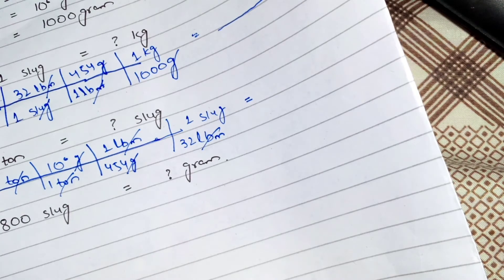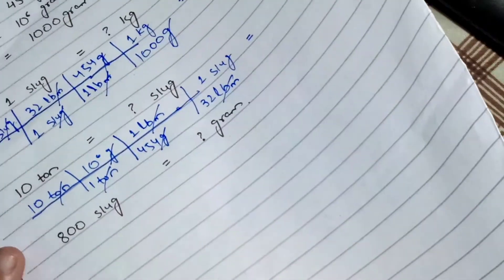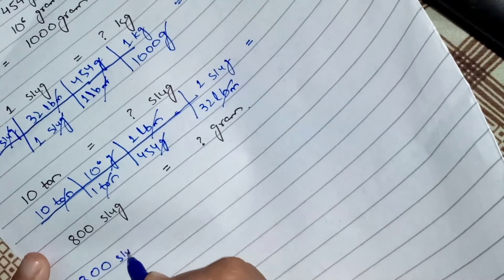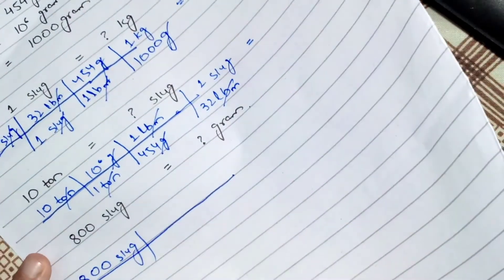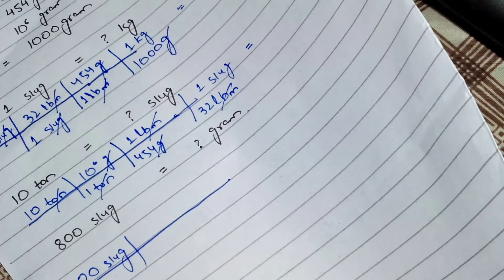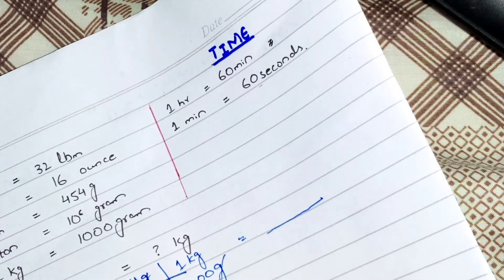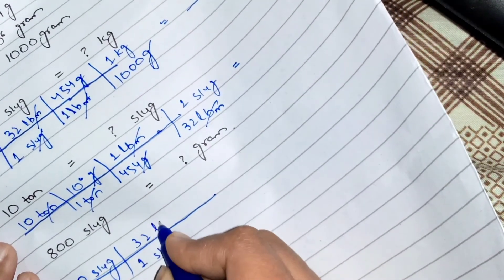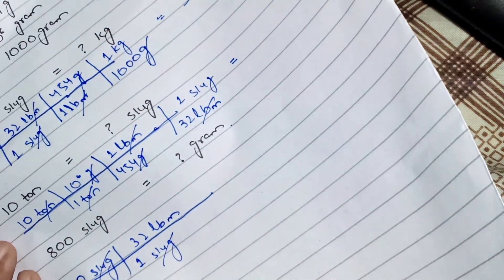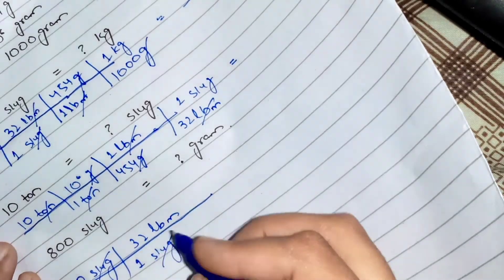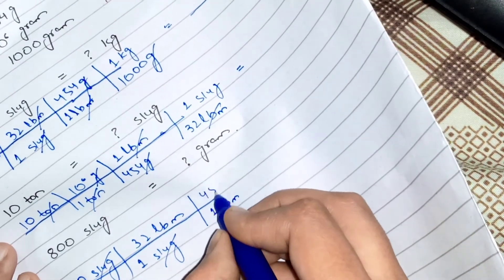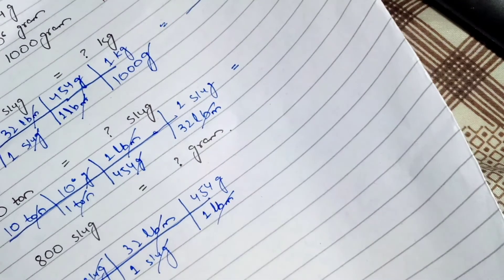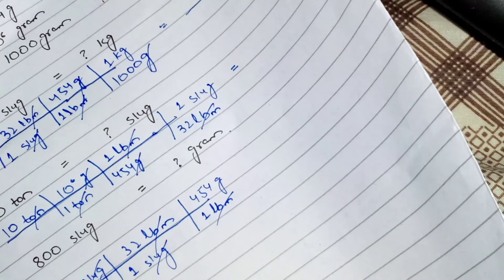We write 800 slug in the conversion setup. The alternate way is: slug to lbm, then lbm to gram — a straightforward two-step conversion. One slug equals 32 lbm, so slug cancels slug. Then one lbm equals 454 gram, so lbm cancels lbm, and we get our answer in grams.